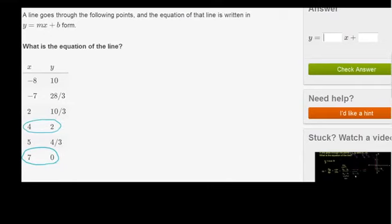So what is our change in x here? So our change in x here, if we go from 4 to 7, our change in x is equal to 3. Change in x is equal to 3. And what's our change in y here? So we went up from 4 to 7. We increased by 3. Our y decreased by 2. Change in y is equal to negative 2. So our slope, which is equal to change in y over change in x, is equal to negative 2 thirds.